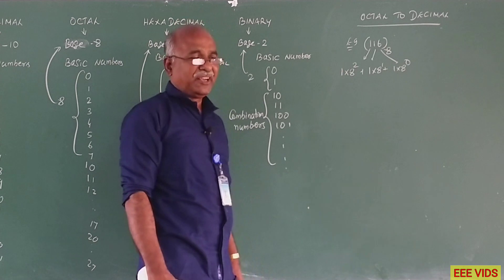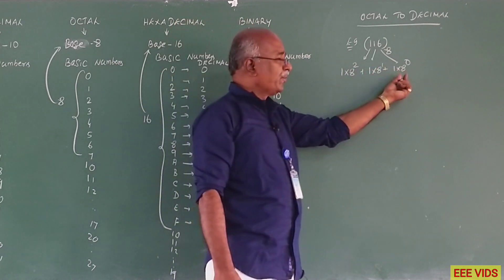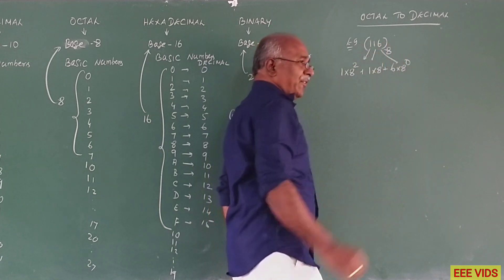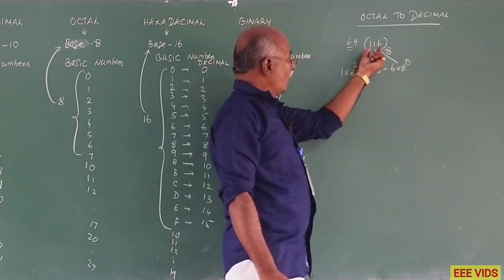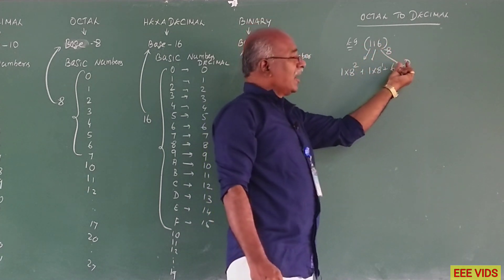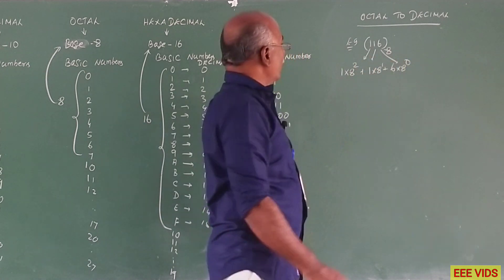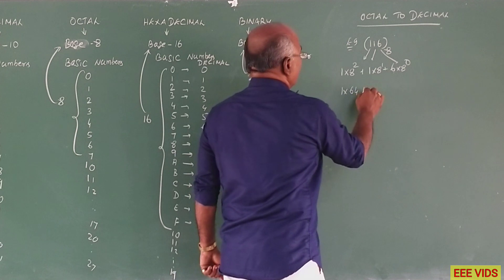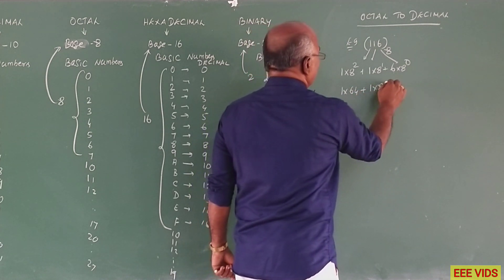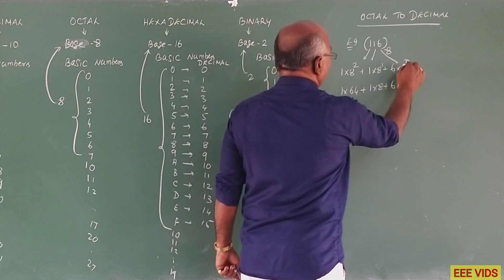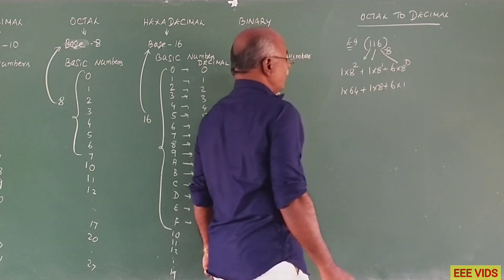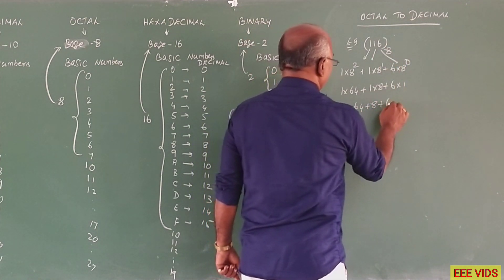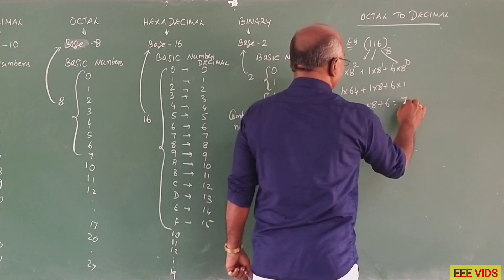Octal base is 8, and 6 into 8 power 0. So 8 power 2 is 64, plus 1 into 8, plus 6 into 8 power 0. Anything power 0 is 1. So 64 plus 8 plus 6 equals 72 plus 6, which equals 78.